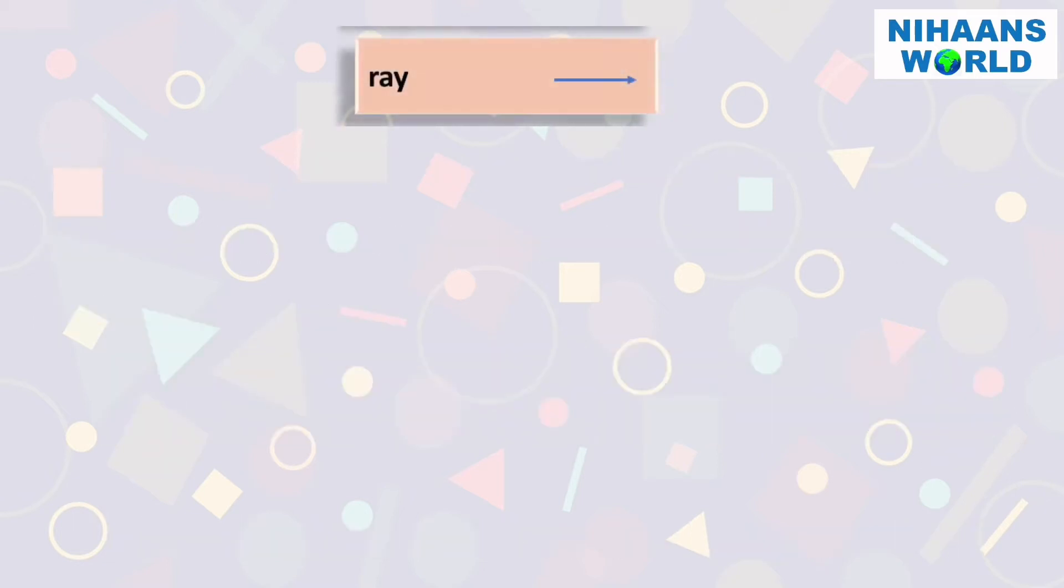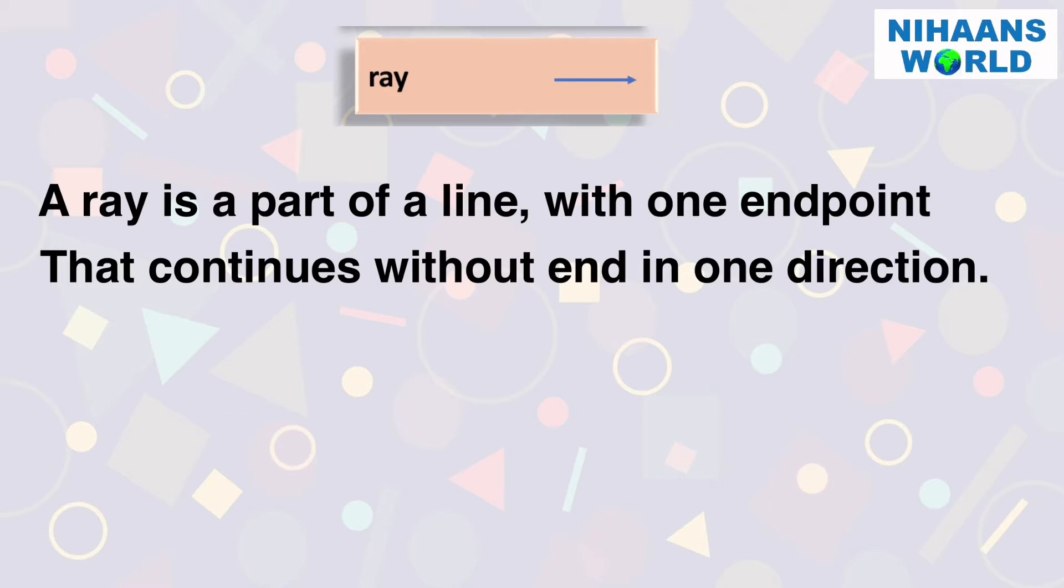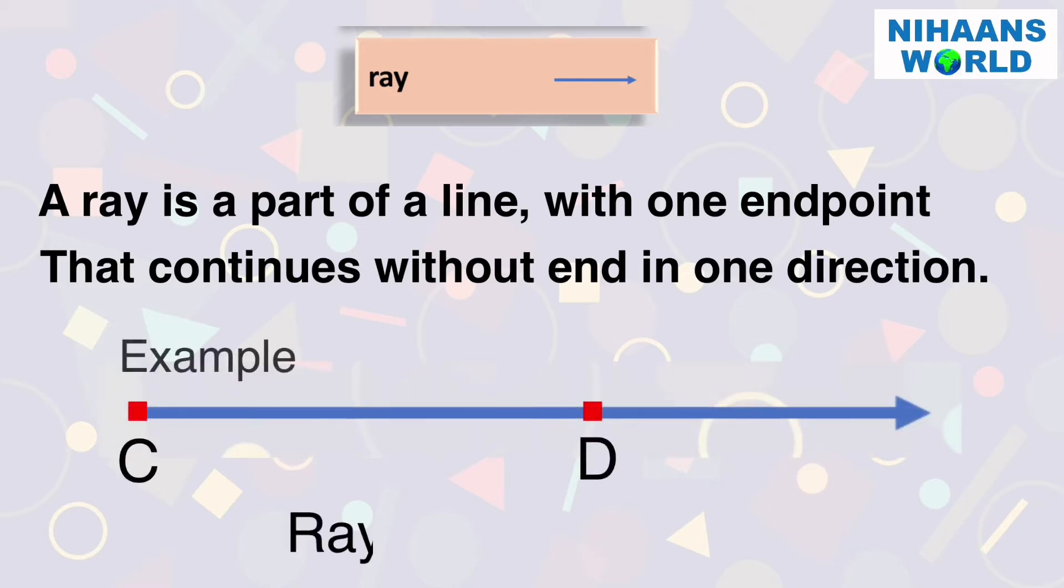What is a ray? A ray is a part of a line with one endpoint that continues without end in one direction. For example, ray CD.